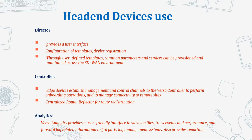The Versa Director is also going to onboard our controller via the out-of-band management interface. The controller is a head-end device. All our SD-WAN devices establish management and control channels to the Versa Controller to perform the onboarding operation and to manage connectivity to remote sites. The controller is a centralized route reflector for route redistribution. All your edge devices form BGP peering with the controller only — they do not form any BGP neighborship with each other. The controller is responsible to redistribute and share all the routes between these client devices.